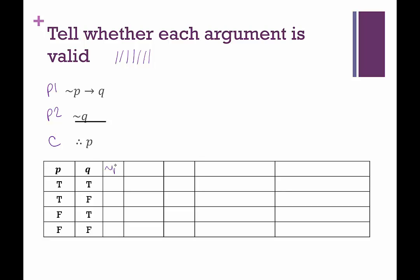So we have P, Q, not P, not Q, not P then Q. For the final two columns, I tend to write them as P1 and P2 for the conjunction of the premises, and then P1 and P2 in parentheses therefore the conclusion. Or you can write them out fully: not P then Q, and not Q, leading to the conclusion of P. You can write it either way — check with your instructor to see if it matters.